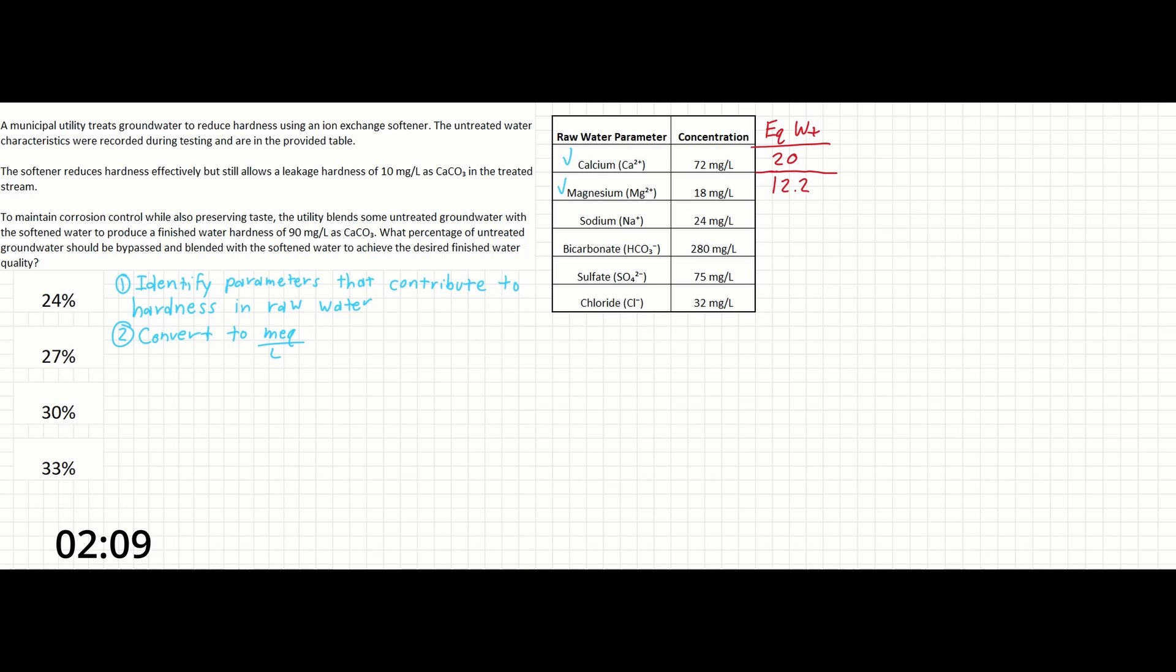In version 1.6 of the environmental reference manual, page 22 contains a table called common radicals in water. This is one place in the manual from which you can obtain these numbers. So the equivalent weight of calcium is going to be 20, and the equivalent weight of magnesium is going to be about 12.2.